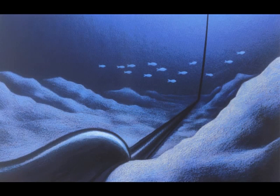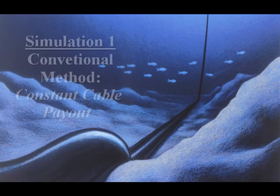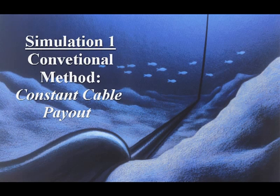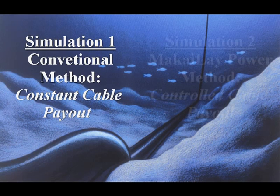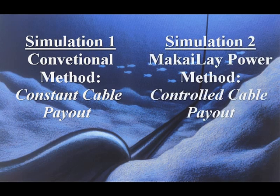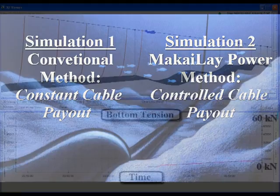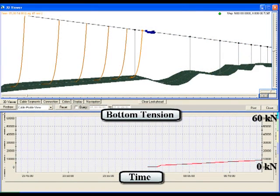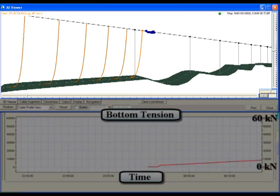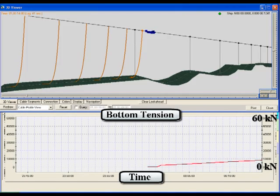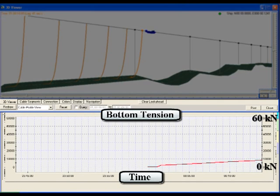In this video, we will show two simulations with identical cables and cable paths, but using two different installation methods: one in which cable is paid out at a constant rate, and one in which the cable payout rate is automatically controlled using Makai LayPower. Here we will show the user interface for Makai LayPower, with a 3D viewer shown at the top and a real-time graph of the bottom cable tension shown at the bottom.